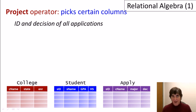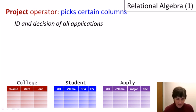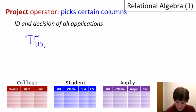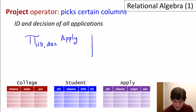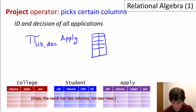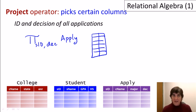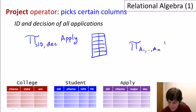The next operator is the project operator, which picks certain columns rather than rows. It is written using the Greek PI symbol, with a subscript listing the column names to extract. For example, to get only the student ID and decision from the apply relation, we write PI with subscript (studentID, decision) applied to apply. The result has all tuples of apply but only those two columns. In general, the project operator takes a list of attributes and a relation name.